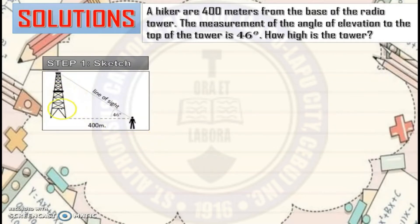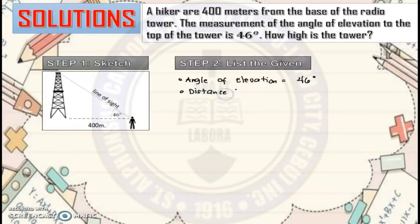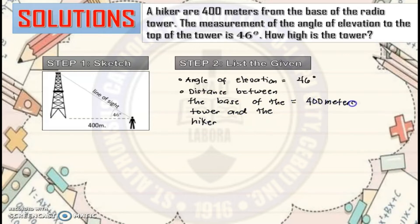Here is the radio tower, and from the base of the radio tower, there's a hiker 400 meters away. The angle of elevation from the hiker to the top of the radio tower is 46 degrees. The question is how high is the tower. Step two: list the given. The angle of elevation is 46 degrees, and the distance between the base of the tower and the hiker is 400 meters. We are looking for the height of the tower.